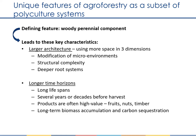There are several unique features of agroforestry systems that set them apart from other polycultures. These characteristics have to do with their defining feature, which is that they always include a woody perennial component. Compared to systems with only annual and herbaceous crops, the presence of trees, shrubs, or vines gives us two key characteristics: one, a larger architecture or three-dimensional structure, and two, a slower, longer time horizon of growth and development. These two broad characteristics lead to some important details I will discuss in the next set of slides.